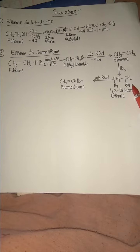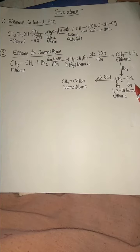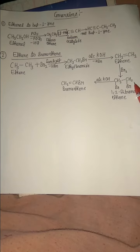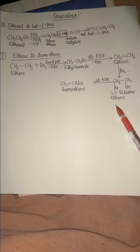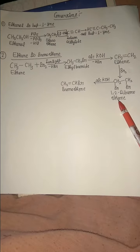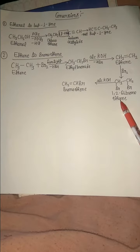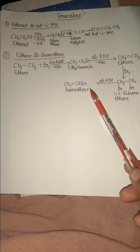Ethene reacts with bromine to form ethane dibromide, whose IUPAC name is 1,2-dibromoethane. 1,2-dibromoethane then reacts with alcoholic KOH to form bromoethane.